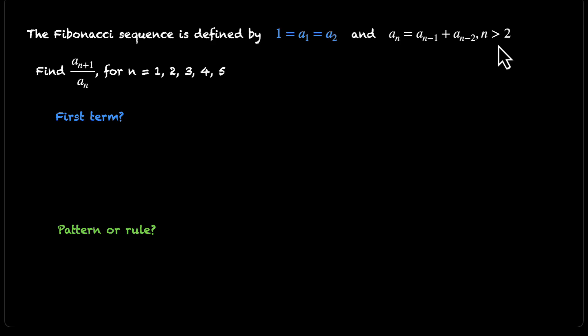Let's put this down. We know the first term, which is 1. The second term is also 1. That's a1 and a2. And for the remaining three terms—a3, a4, and a5—we can use this formula.